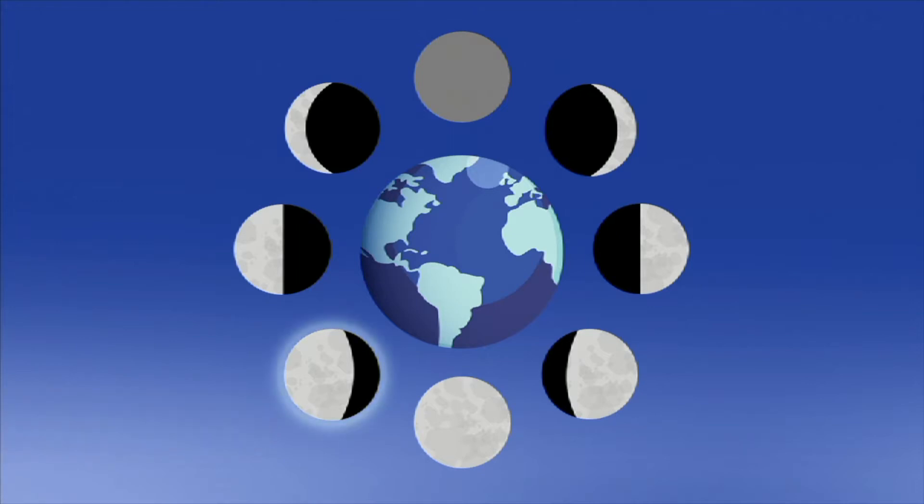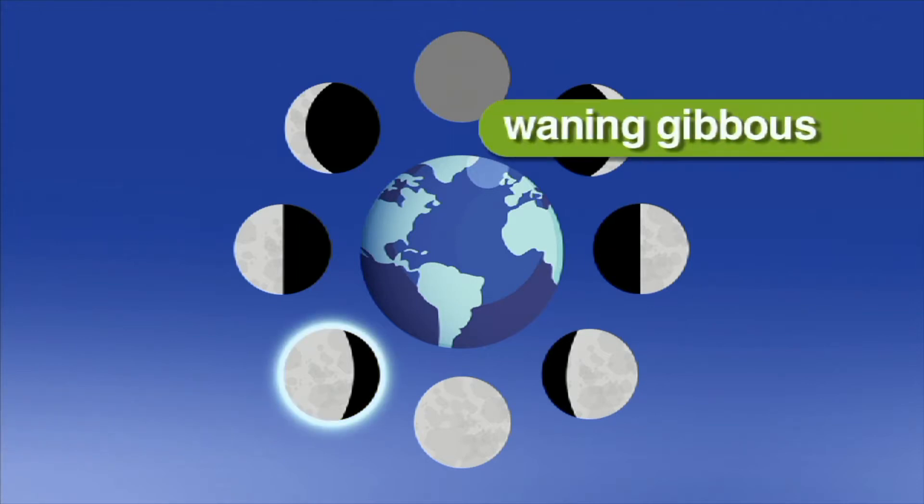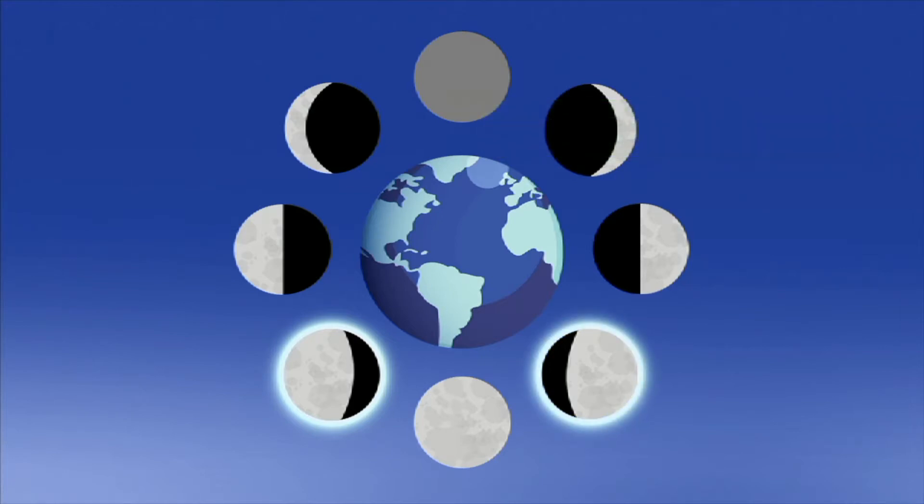The next phase is called waning gibbous. This looks just like the waxing gibbous phase, except the moon is now on its way to getting smaller.